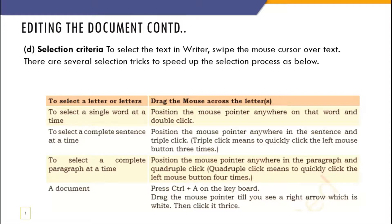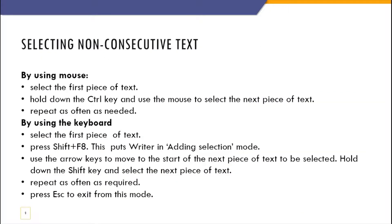Selecting non-consecutive text: if you want to select the first line, then the fourth, fifth, eighth, and twelfth lines, using the mouse — select the first piece, hold down Ctrl, then select the next piece, and repeat as needed. Using the keyboard — select the first text, press Shift+F8 to turn on adding selection mode, then use arrow keys to select the next pieces.